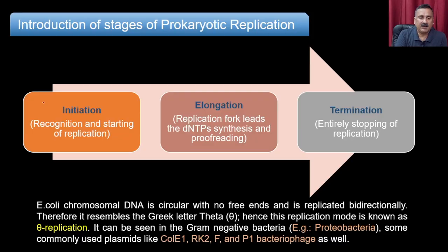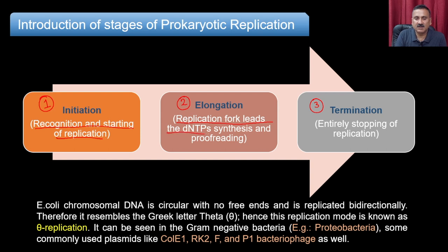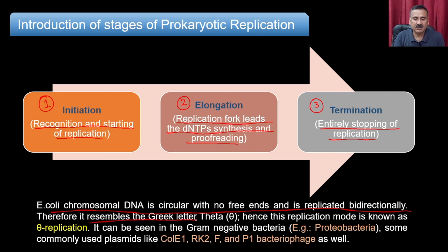There are three major stages of DNA replication: initiation (recognition and starting of replication), elongation (replication fork progression, dNTP synthesis, and proofreading), and termination (stopping of replication). The E. coli chromosome is circular with no free ends and is replicated bidirectionally — resembling the Greek letter theta, hence this replication mode is called theta replication. It is seen in gram-negative bacteria such as proteobacteria, and in plasmids like ColE1, RK2, F, and P1 bacteriophage.